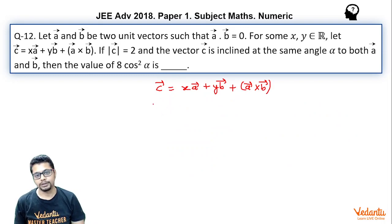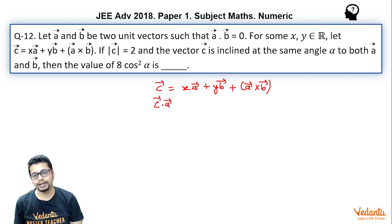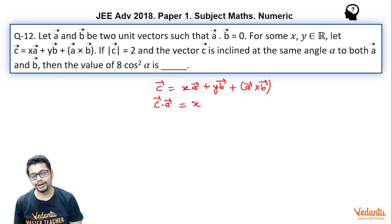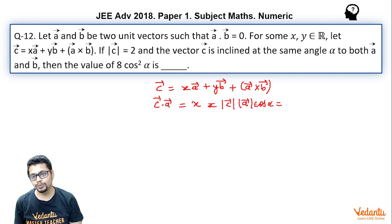Now let me take you through a more general method. Given this equation, if I take dot product with A vector on both sides, I get C vector dot A vector on the left hand side, and X times A vector dot A vector. Since A vector is a unit vector, I essentially get X plus Y times B vector dot A vector which is 0, plus A vector cross B vector dot A vector. Now A vector cross B vector is perpendicular to A vector, hence that dot product is 0. So C vector dot A vector turns out to be X only, which equals magnitude of C vector times magnitude of A vector times cos alpha — that is 2 times 1 times cos alpha, so X = 2 cos alpha.